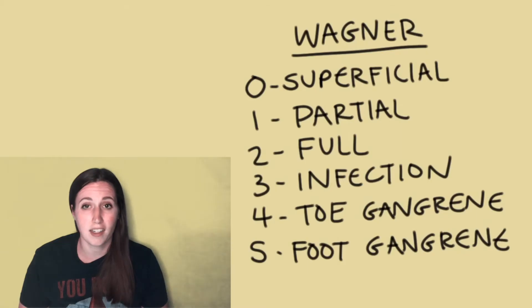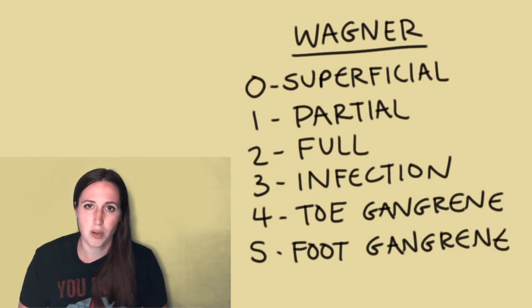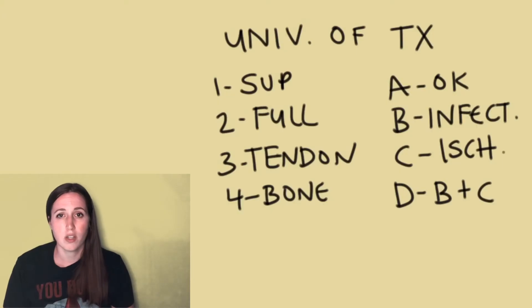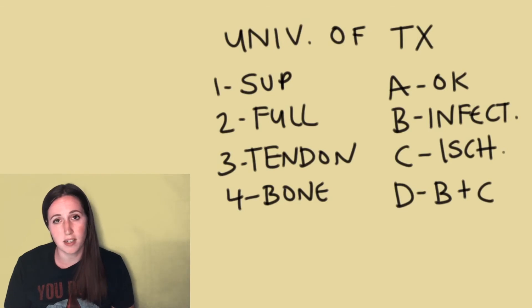The severity of these wounds is often recorded via the Wagner scale, which is similar to staging in pressure ulcers, but it's off just a little bit. The University of Texas also has an ulcer classification system that's used on these types of wounds to predict whether an amputation will be necessary.